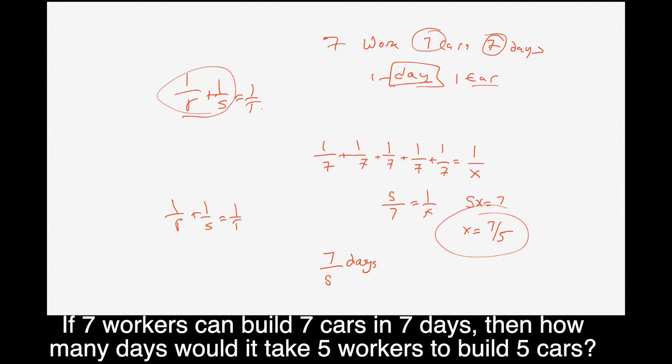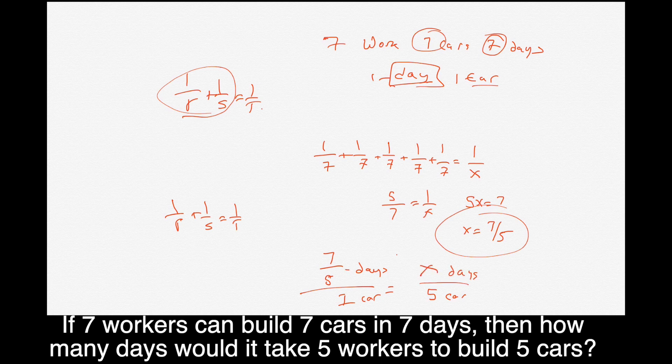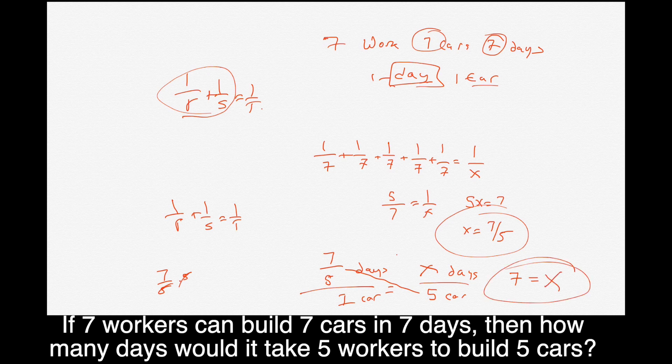But we want five cars, right? So it takes seven fifths days to do one car. There's a few ways to do this, but if you thought of it as a ratio, it takes seven fifths days to do one car. So if they want to do five cars, and then you could call X days, then you can cross multiply seven fifths times five. The fives cancel. So seven fifths times five is seven, and that equals X. That's the answer. It's going to take those five workers seven days to do five cars.